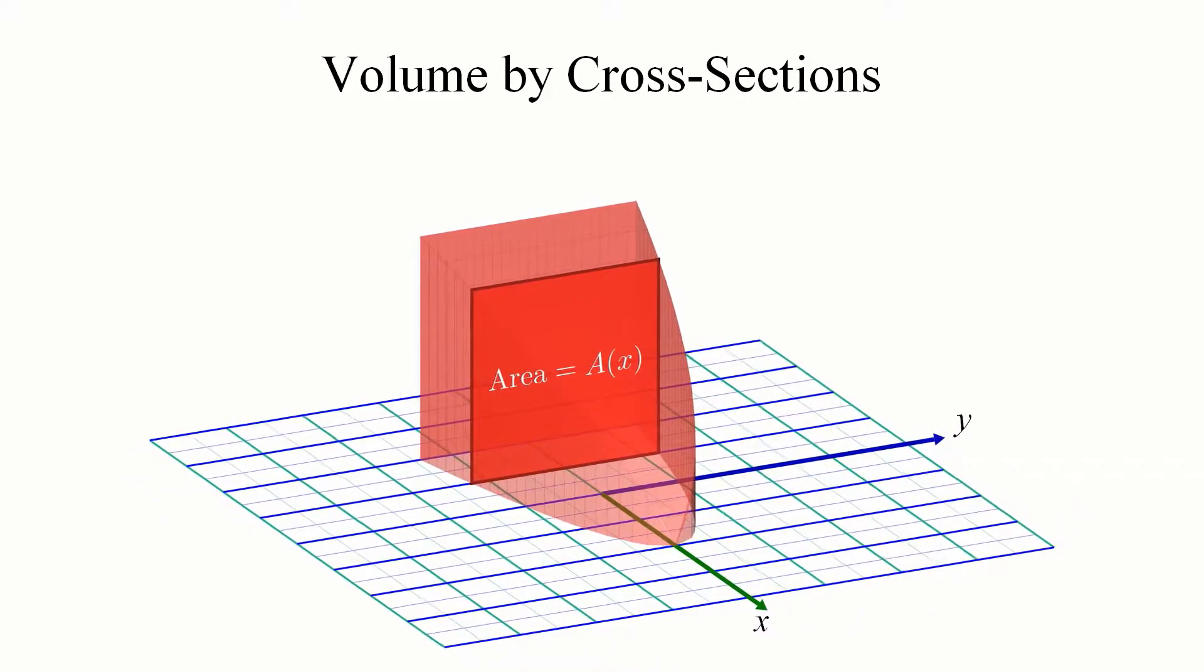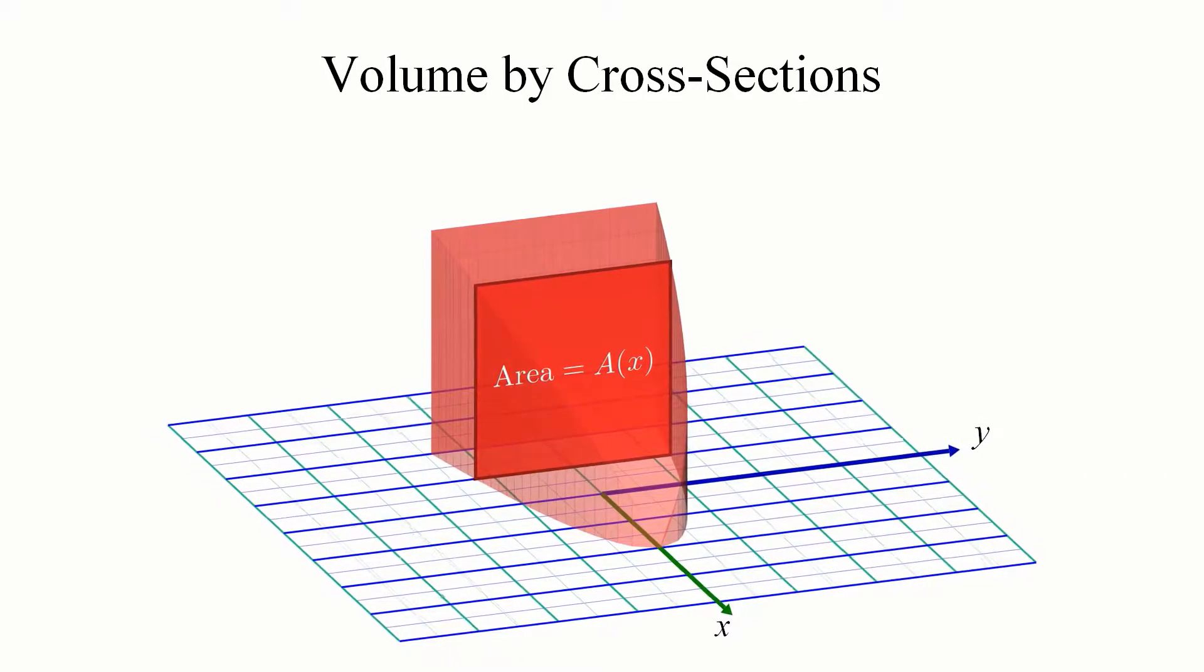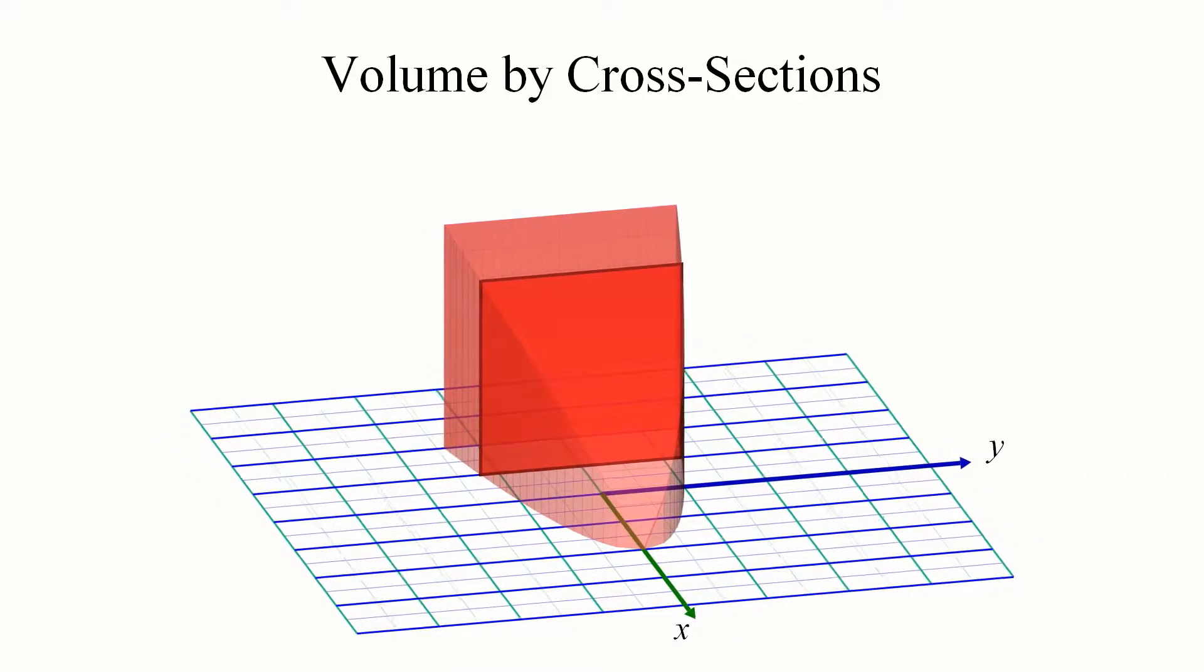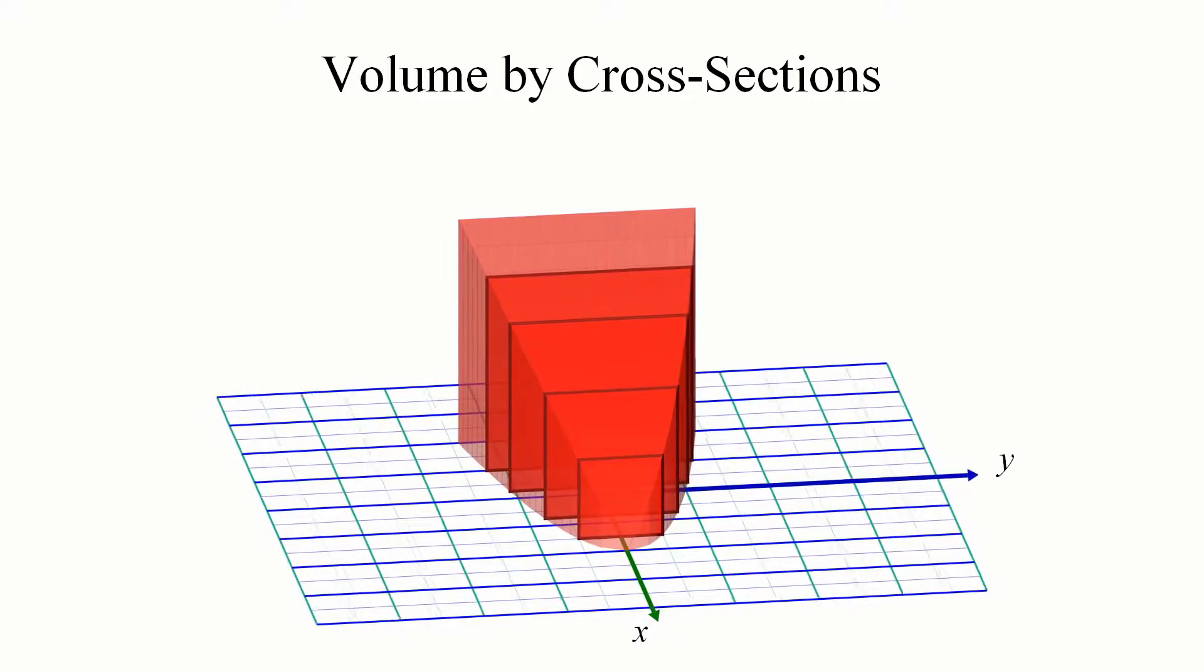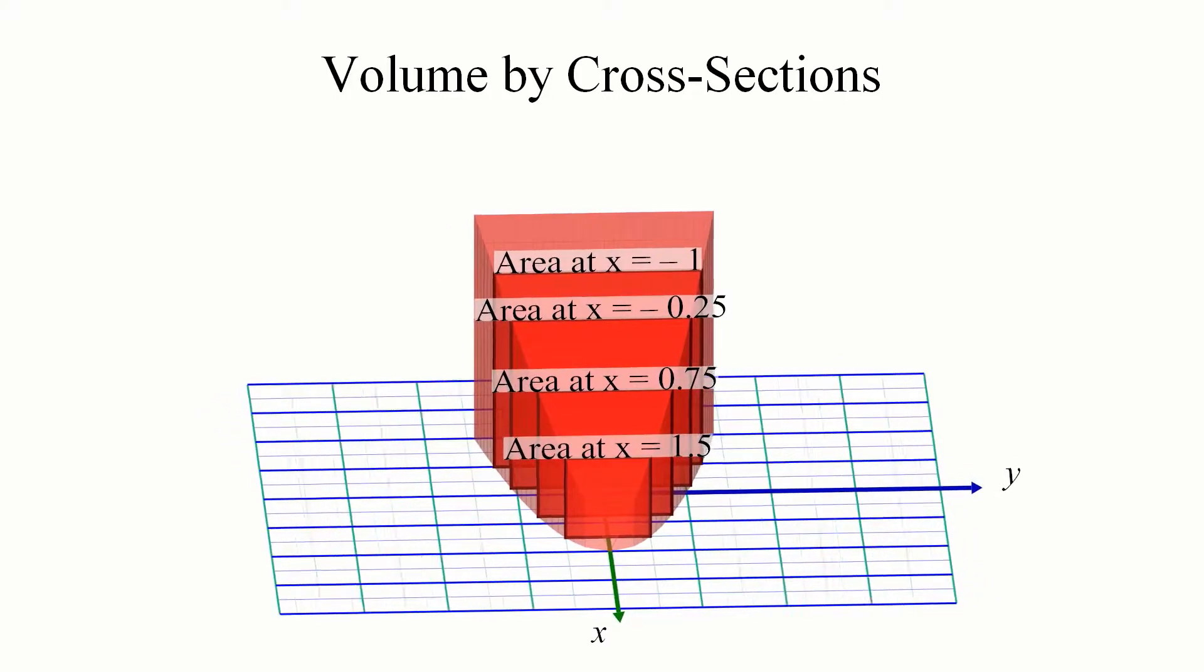This formula would be a function of whichever variable's axis is perpendicular to the slices, basically giving you a way to label every single slice with its position along a certain axis.